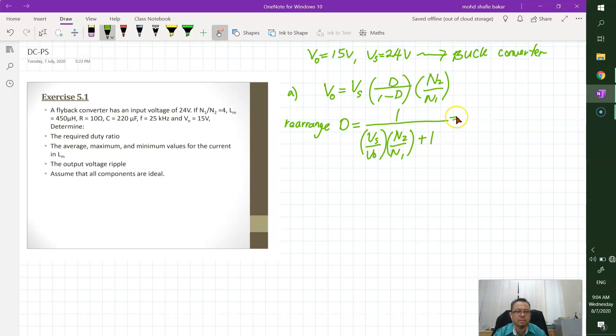So what we have here, we get 1 over Vs over Vin, so we get 24 over 15, this one 1 over 4, plus 1. You need to find the answer by your own self.